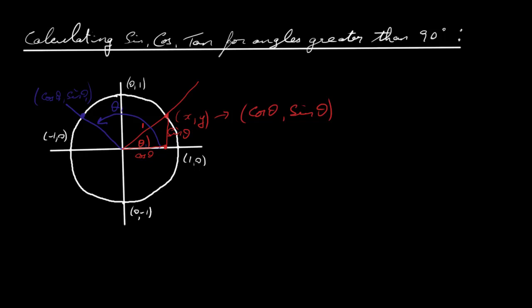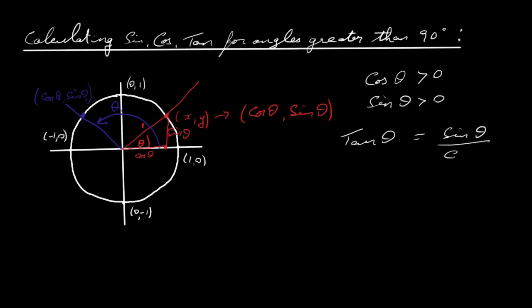As a result, because cos theta is positive and sin theta is positive, then tan theta — which is sine over cos, sine theta over cosine theta — will also be positive, because both of these are positive.